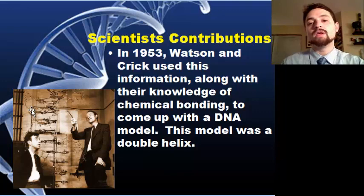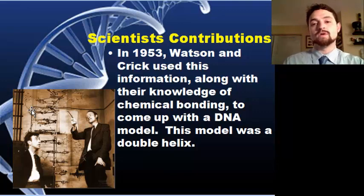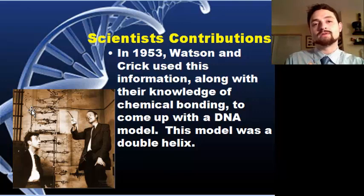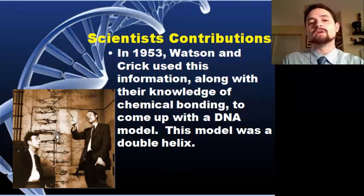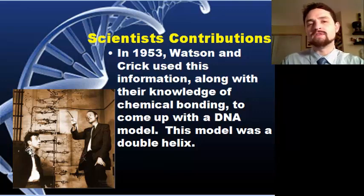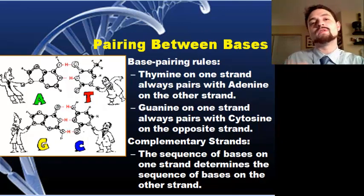In 1953, Watson and Crick discovered that DNA is in fact a double helix. Using Chargaff's chemical data — that adenine and thymine are always in equal amounts, and cytosine and guanine always in equal amounts — along with the x-ray diffraction of Franklin and Wilkins, they put together the model of DNA. You can see one of their first models in the picture; this is Crick and this is James Watson.